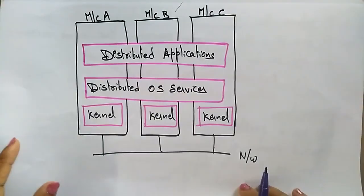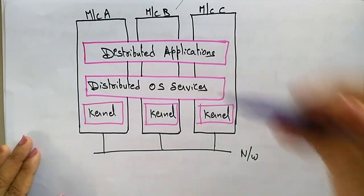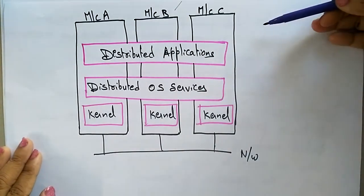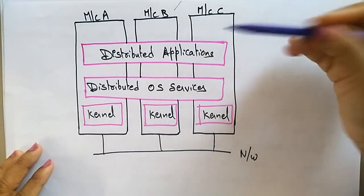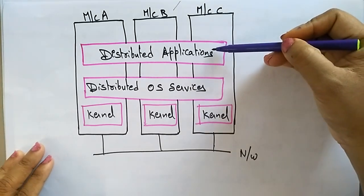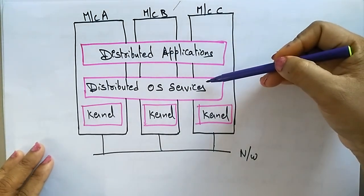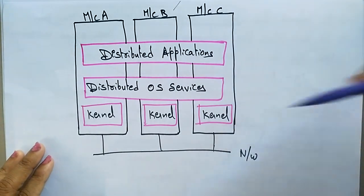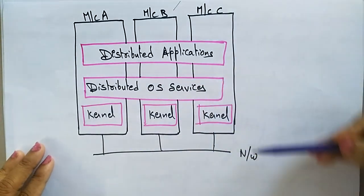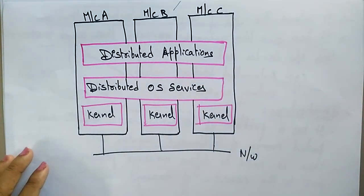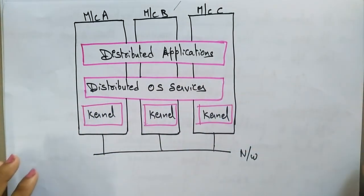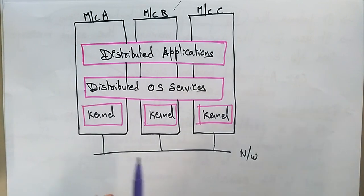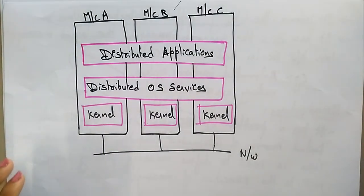Looking at the architecture of the distributed operating system: Machine A, Machine B, and Machine C are independent operating systems sharing resources like distributed applications and distributed operating system services. Each machine has its own kernel, and all systems are connected over a network, sharing the distributed operating system services. Thank you.